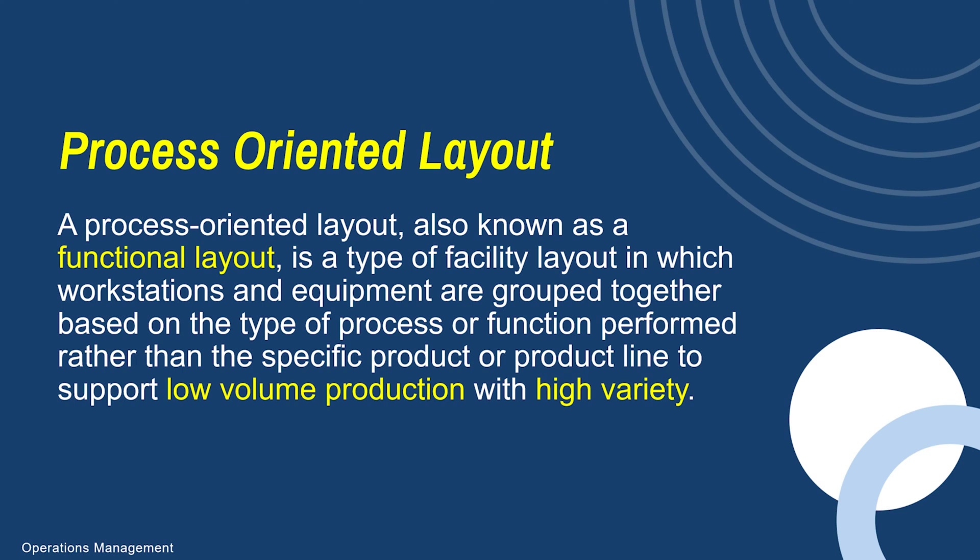When it comes to Apple, the iPhone probably uses a product-oriented layout because you're producing slight variations of the exact same product — maybe just different sizes and different features. Now the process-oriented layout is one in which you're producing many different products on the same equipment, typically at a lower volume of several individual products. This is also called a functional layout.